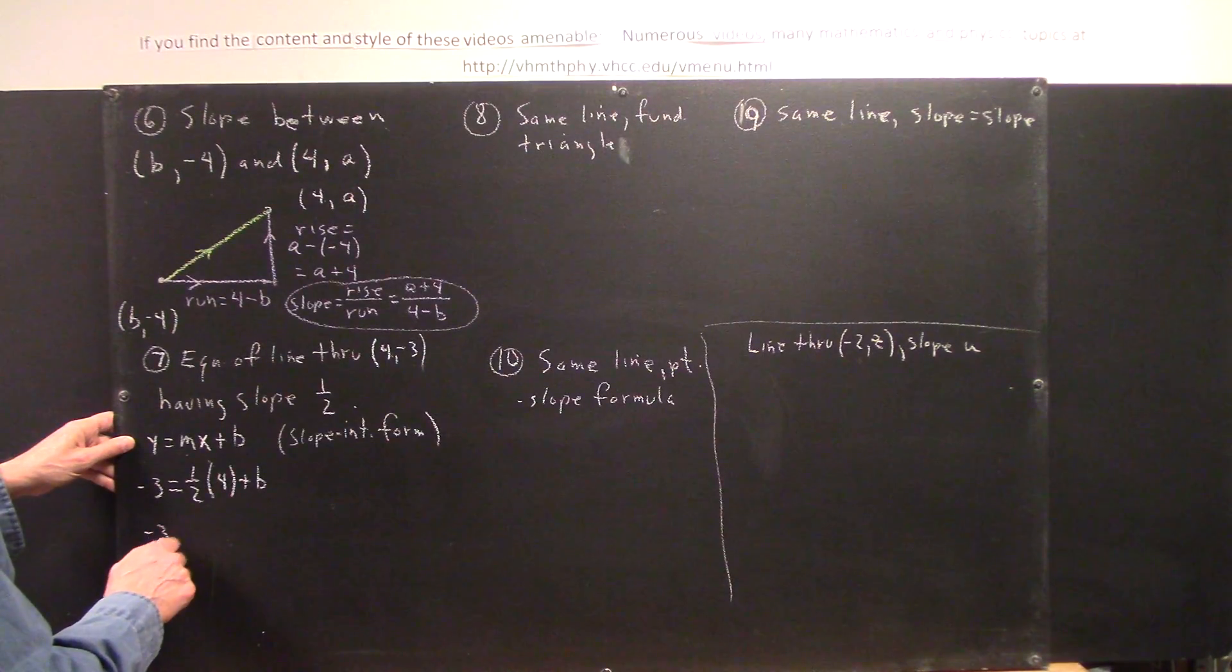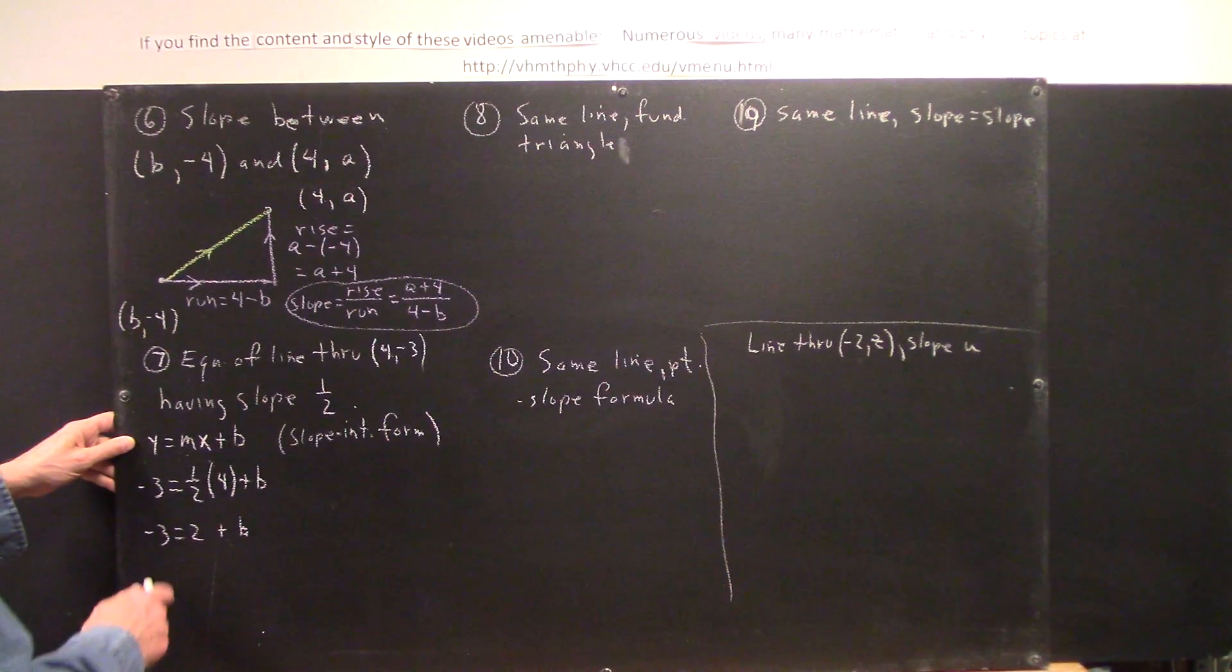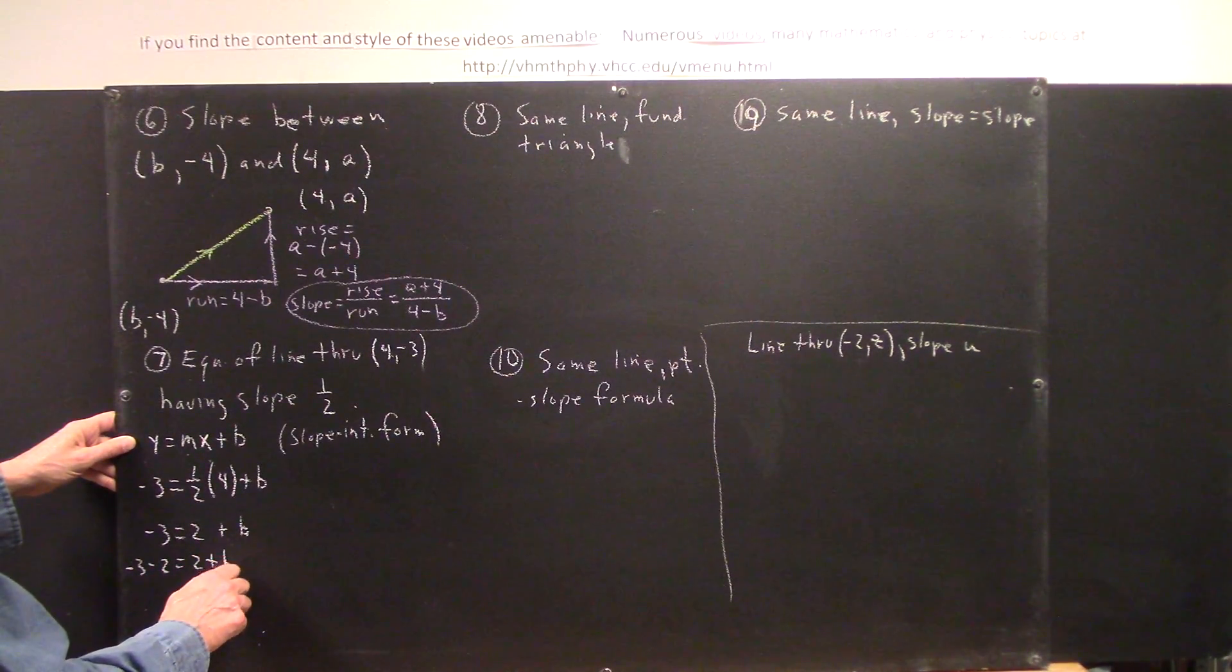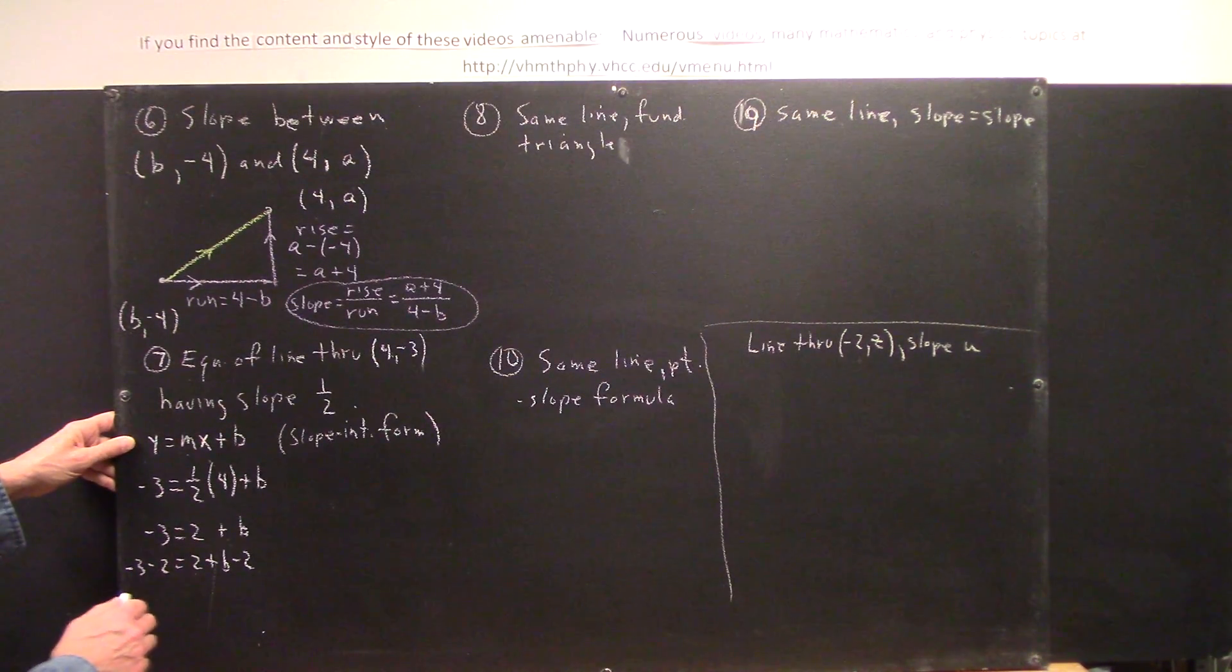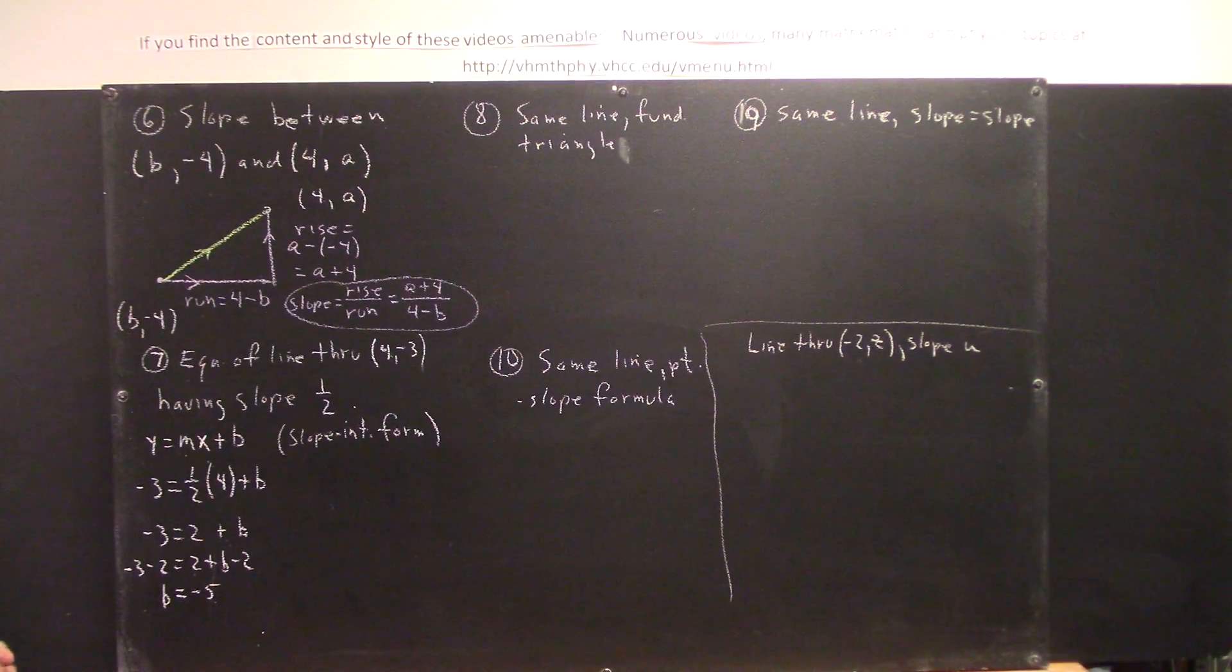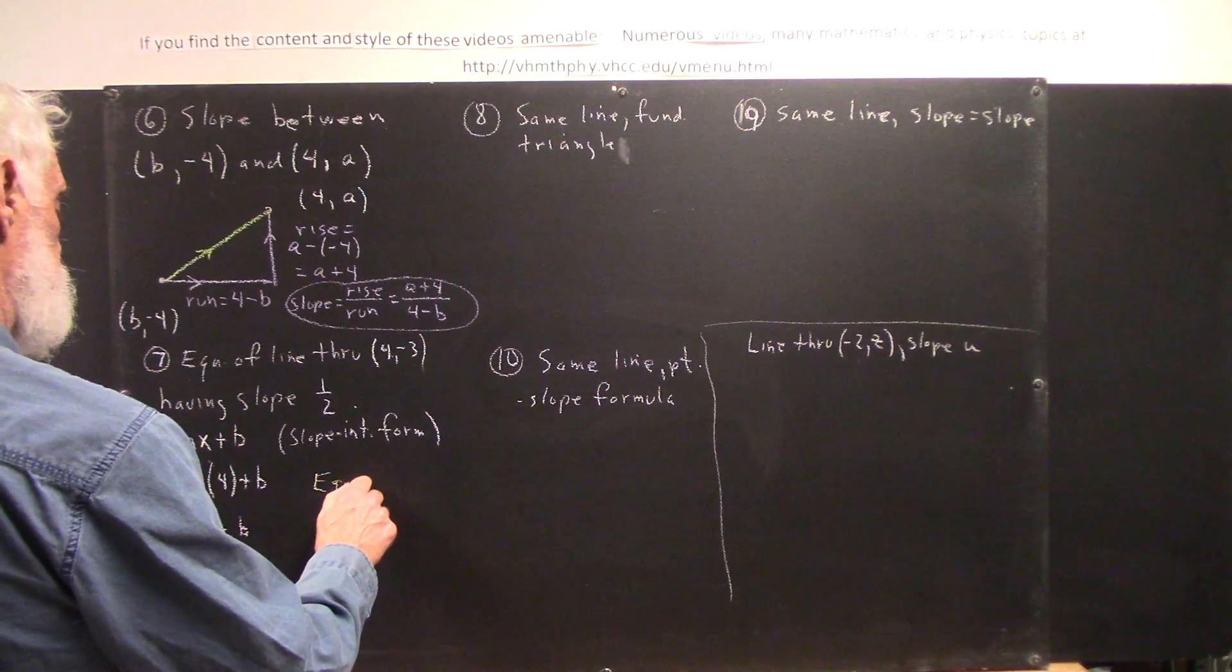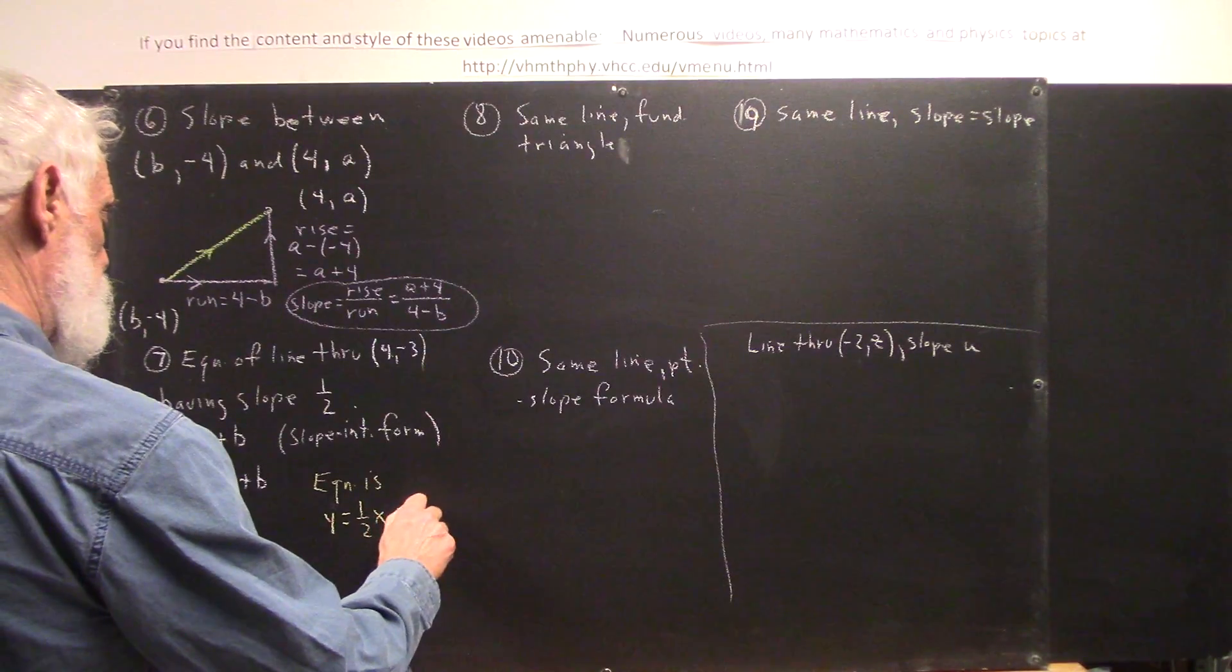Well, let's simplify a little bit. Negative 3 equals 2 plus b. So, including all the steps, we subtract 2 from both sides. 2 minus 2 is 0. We're left with b here. And negative 3 minus 2 is negative 5. And we're going to reverse sides here, but we'll write our b here and our negative 5 here. So b is negative 5. So now, what's our equation? Well, our equation is y equals 1 half x minus 5.